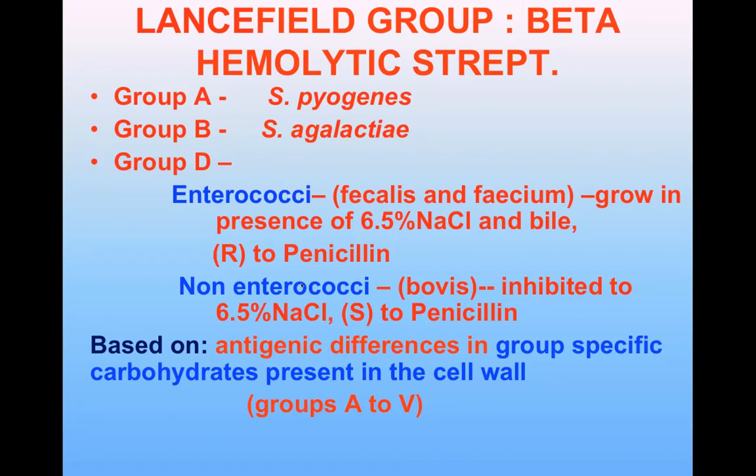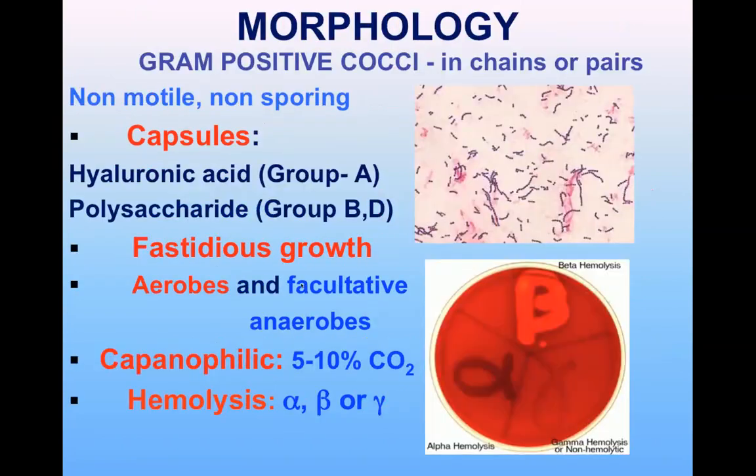Group A is Streptococcus pyogenes, Group B is agalactiae, and Group D are the enterococci or the non-enterococci.